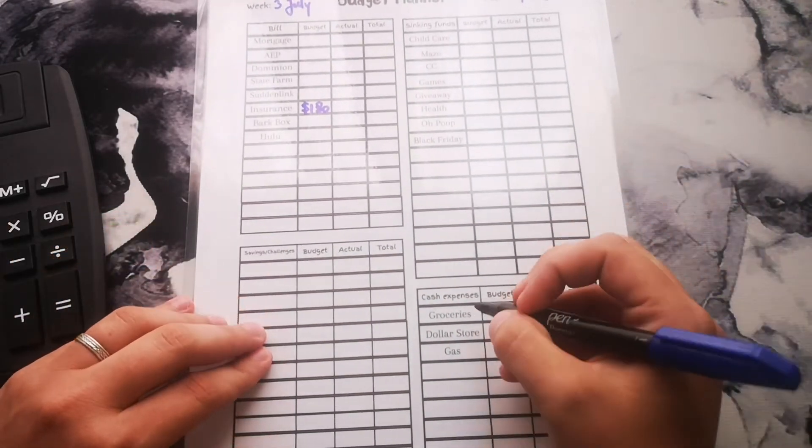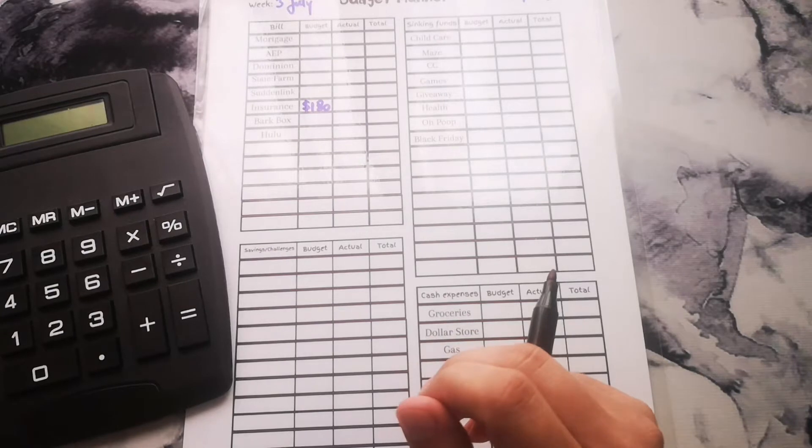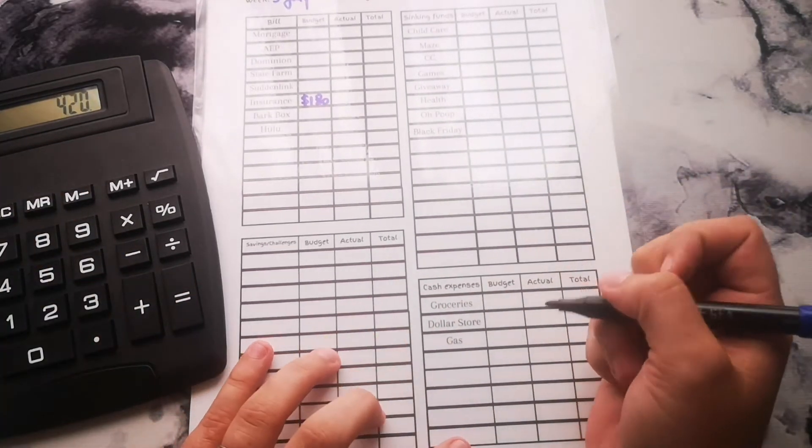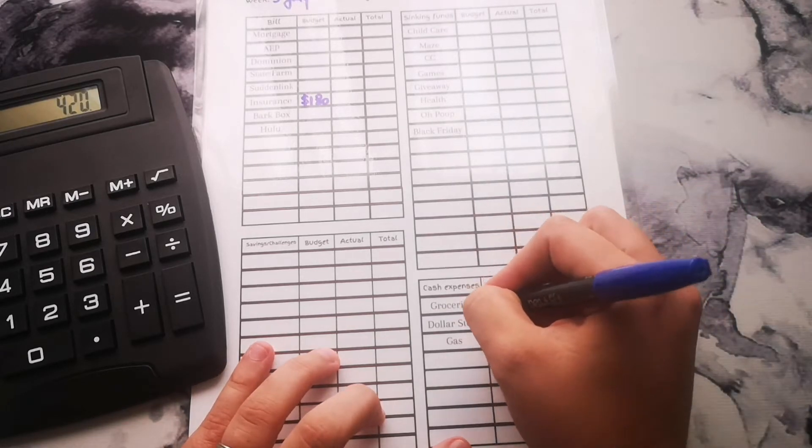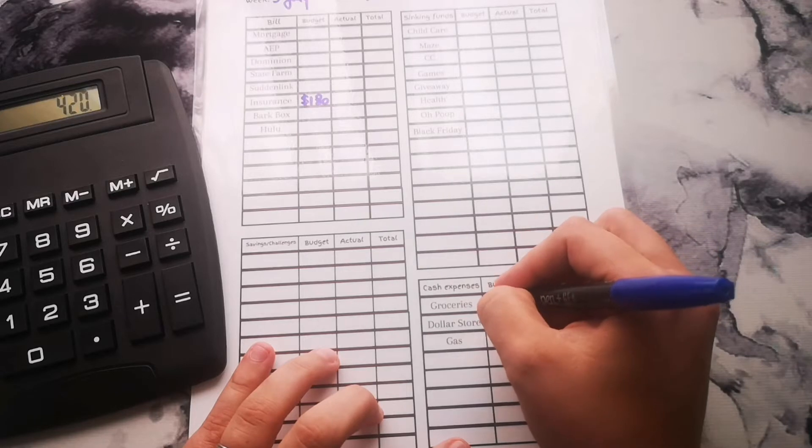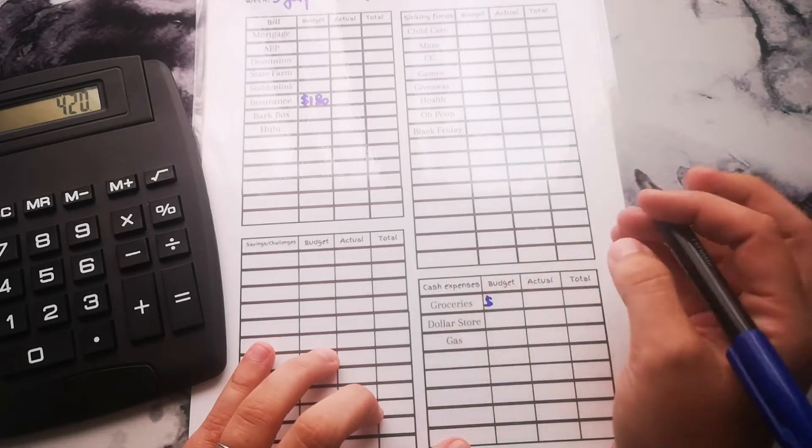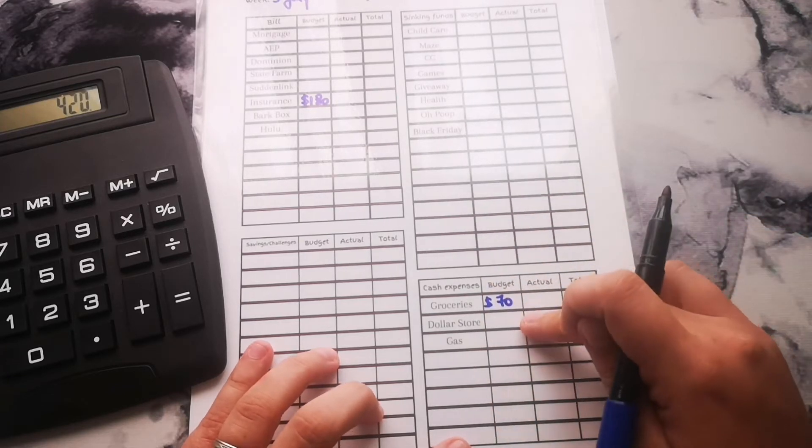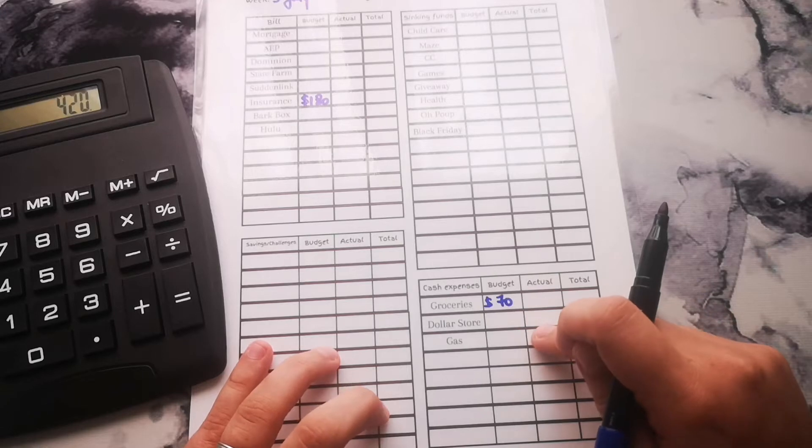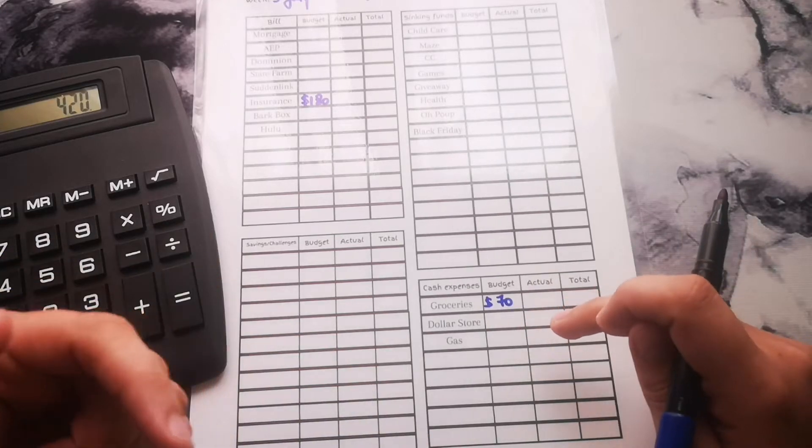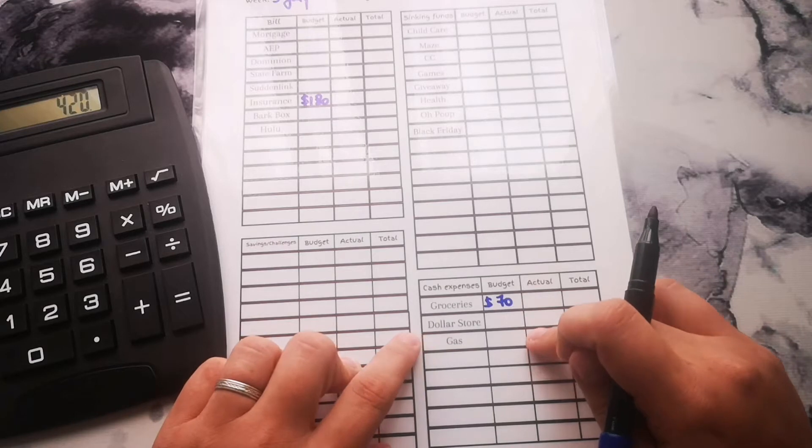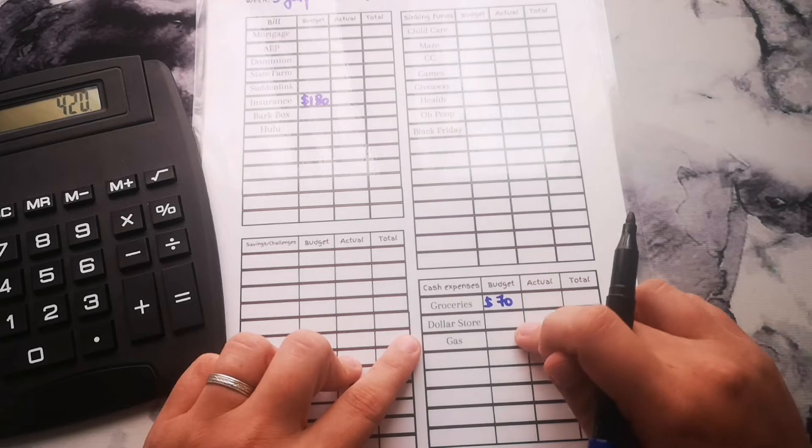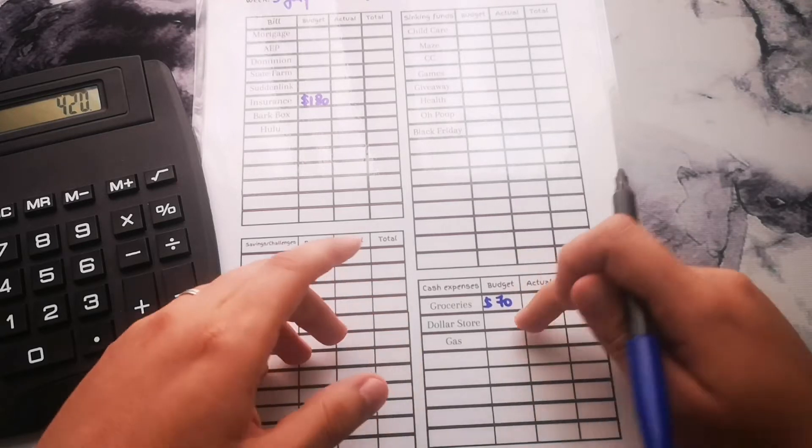We're starting with $420 and then our cash expenses for groceries. I am putting aside $70. I know I initially put $100 on here in my mind, but I already did some grocery shopping yesterday because I needed some chicken for dinner, so I'm not putting the full $100 like I usually do.